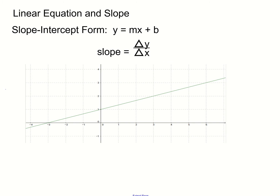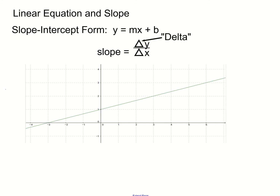There's another way to define slope using symbols. We replace the 'change in' symbol with the Greek letter delta — that's the capital delta. Delta means 'change in,' so you read this as: slope equals change in y over change in x.